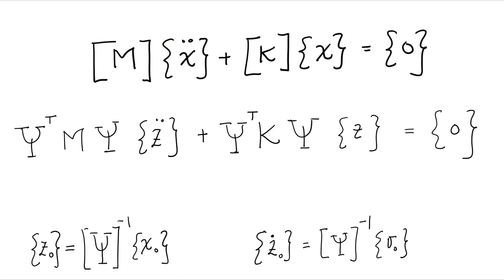If we go back to our equation of motion, and we apply that modal transformation. So basically, we take x double dot, and we write it as phi z double dot. And we take x, and we write it as phi times z. And then we pre-multiply by phi transpose. Obviously on the right hand side is still equal to zero.